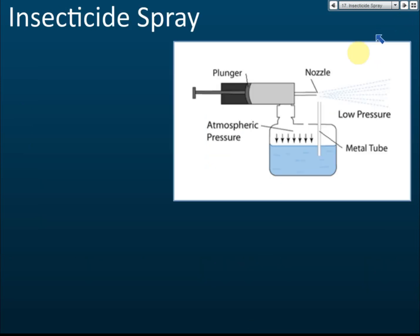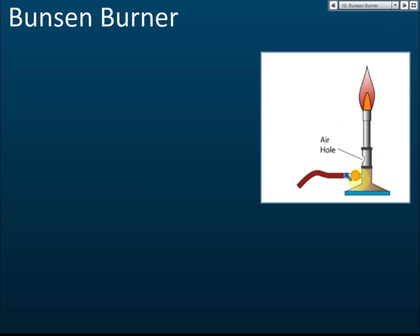For an insecticide spray, when you push the plunger, the air moves faster and reduces the pressure inside, so the higher atmospheric pressure pushes the liquid upwards. For a Bunsen burner, the gas moves upwards and creates a low pressure area. Since the outside pressure is higher, air from outside enters through the air hole, mixes with the gas, and helps it burn by supplying oxygen.